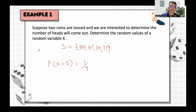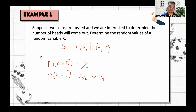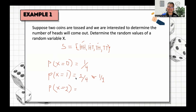For the probability of X equals 1, meaning exactly one head, we have two sample points: HT and TH. So P(X=1) = 2/4, which simplifies to 1/2. For the probability of X equals 2, meaning two heads, only one sample point qualifies: HH. So P(X=2) = 1/4. That is the method for finding the probability values of random variable X, which refers to the number of heads.